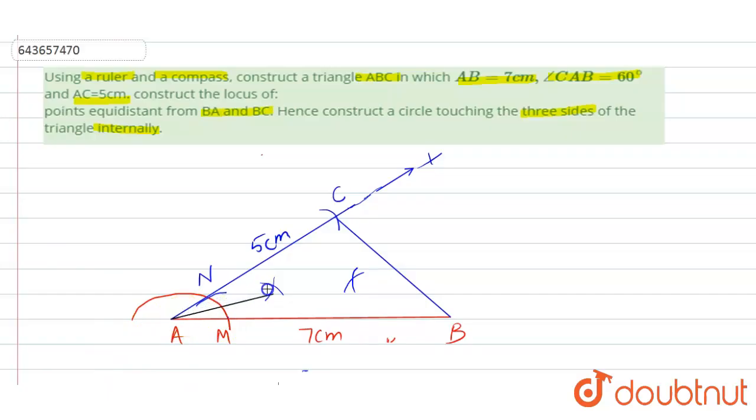Then join it with the help of scale, the angle bisector of CAB and this is the angle bisector of CBA like this. Where these two bisectors join, let this point be O.